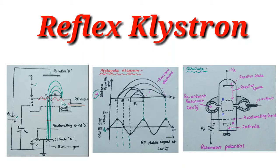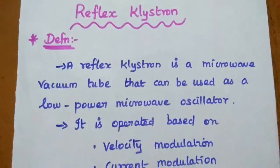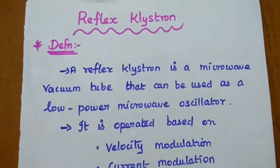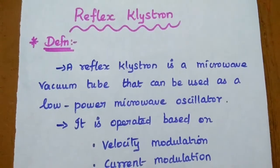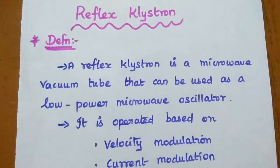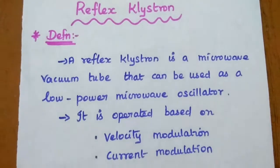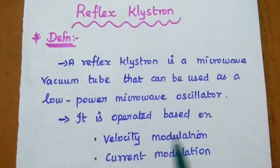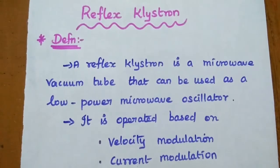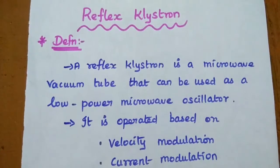Dear students, now we are going to discuss about the reflex klystron and its characteristics in detail. The reflex klystron is a microwave vacuum tube that can be used as a low power microwave oscillator. It is operated based on velocity modulation and current modulation techniques.